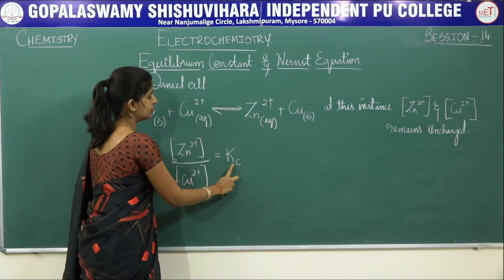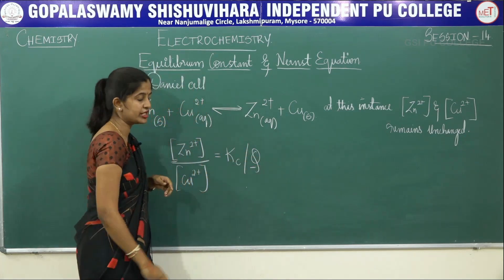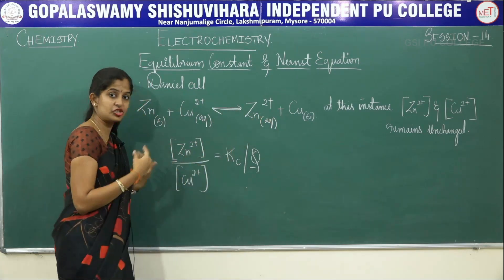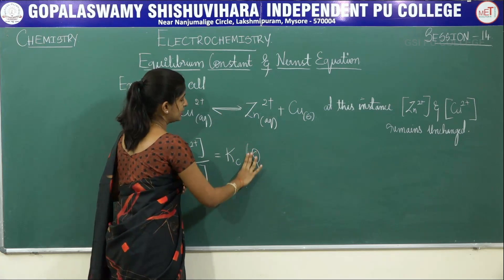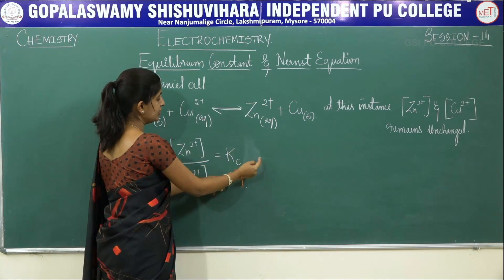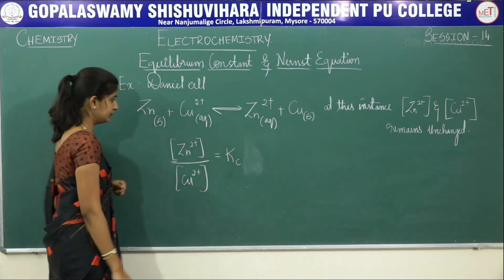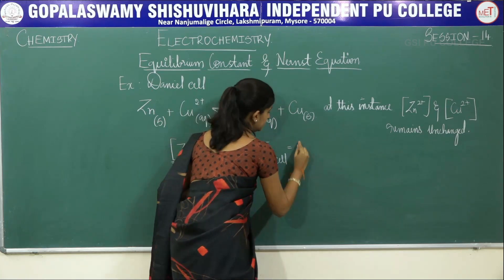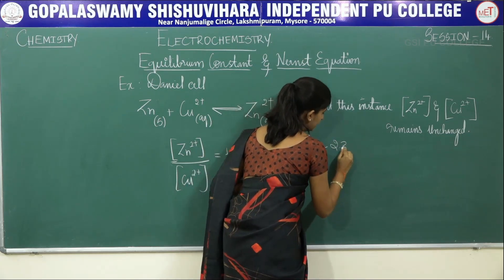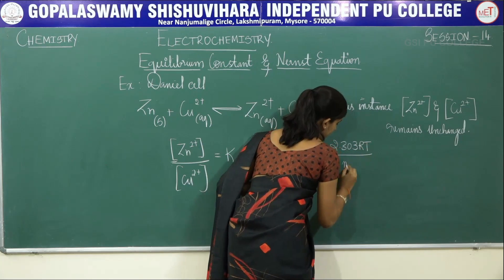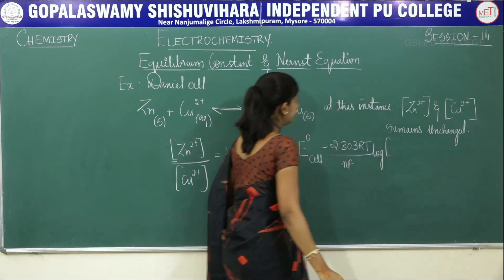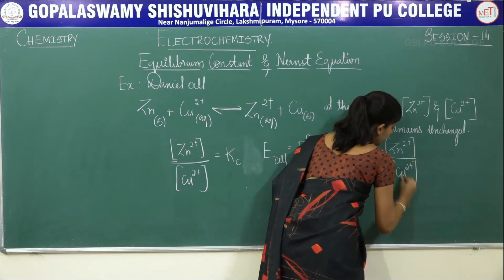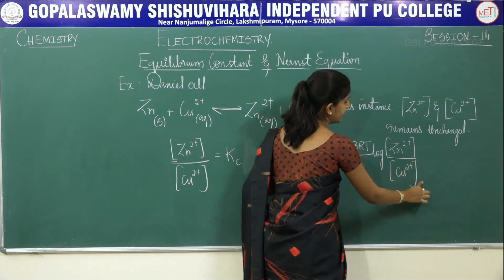If this were your reaction quotient Q for an instance not at equilibrium, Q would not equal Kc. But since the reaction is at equilibrium, the reaction quotient Q becomes equal to your Kc. Going to the Nernst equation: E_cell = E°cell − (2.303RT / NF) × log([Zn²⁺] / [Cu²⁺]), where the log term represents product divided by reactant, or oxidized form divided by reduced form.